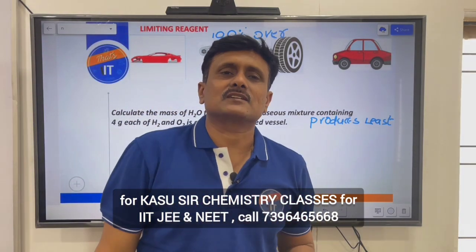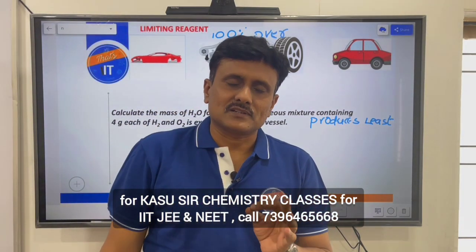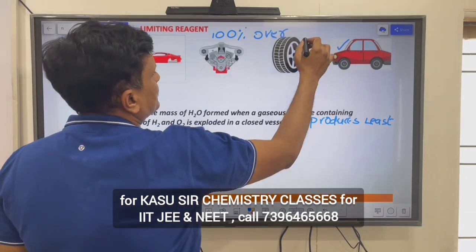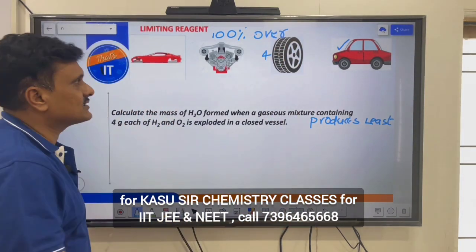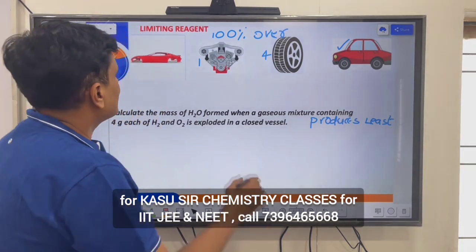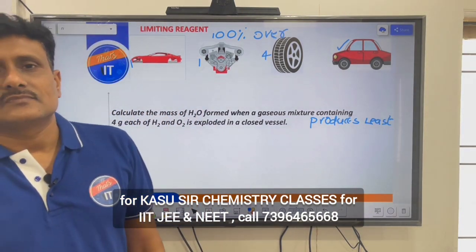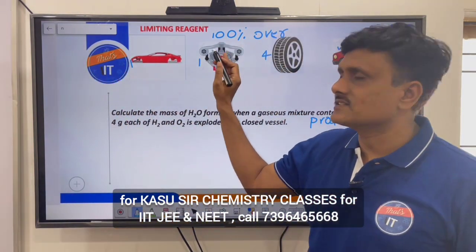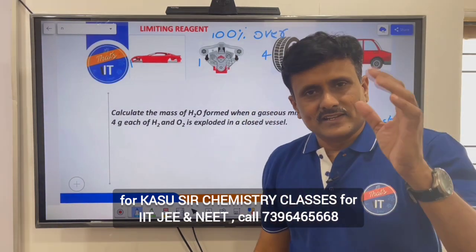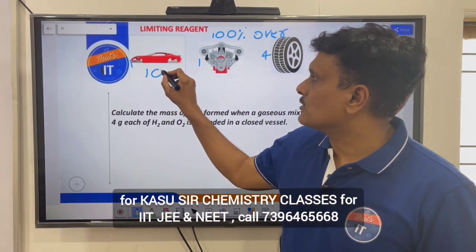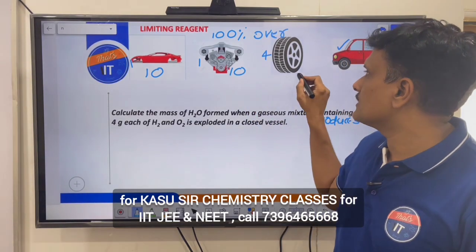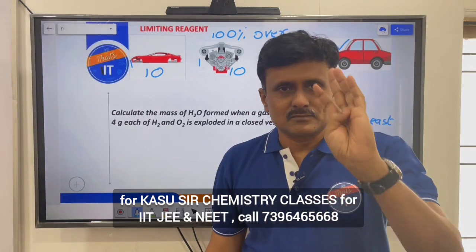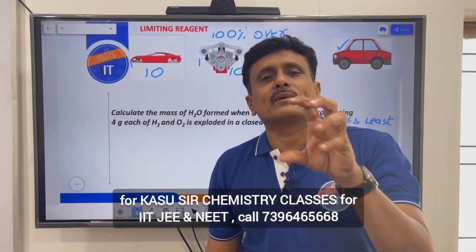The least amount of product is supposed to be obtained from the limiting reagent only. In order to understand that concept, let me give you a common example. Say we are interested in making a car, for which you require four tyres, one engine, and one body. If you want to make a moving car, imagine a case where I have taken equal amounts of all three components — engine, body, and tyre. You tell me how many cars you can make?